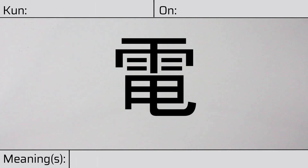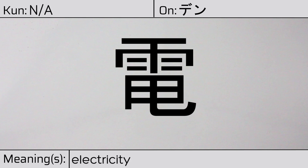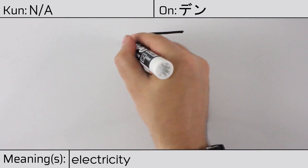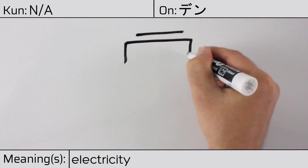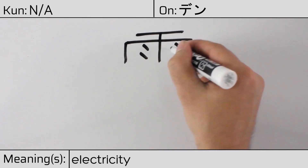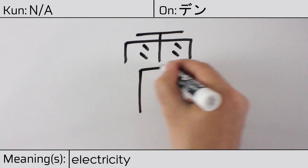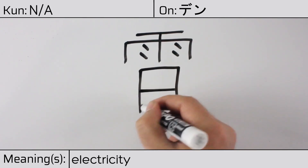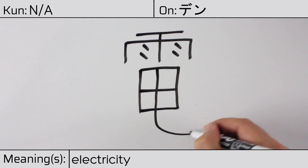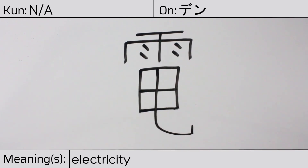Welcome to this lesson on Japanese kanji. Today, we'll be discussing this character. This kanji has no kunyomi or Japanese readings, but it has an onyomi or Chinese reading of ten. This character has the meaning electricity. Here is the stroke order.